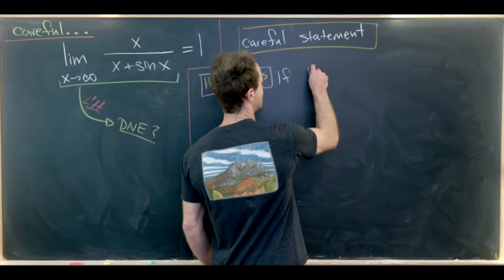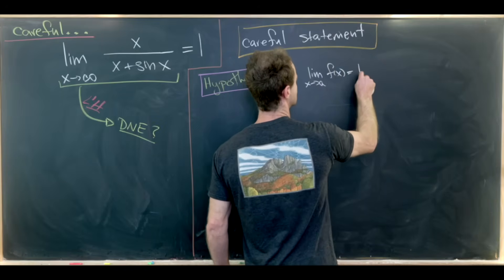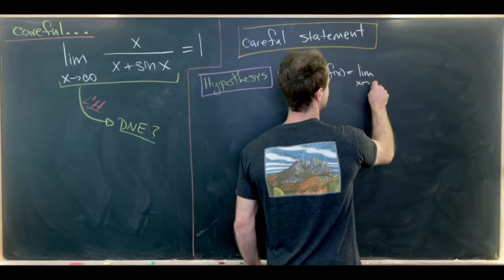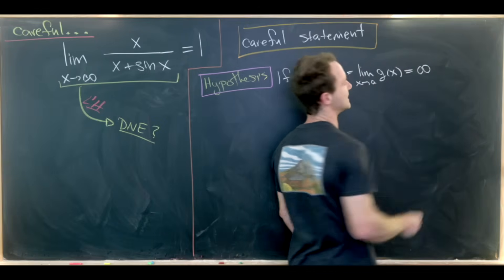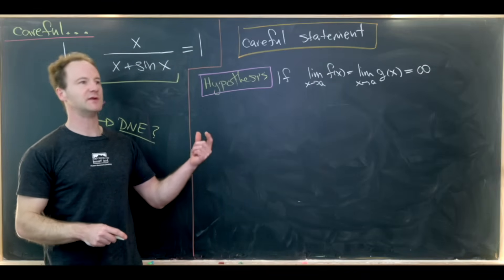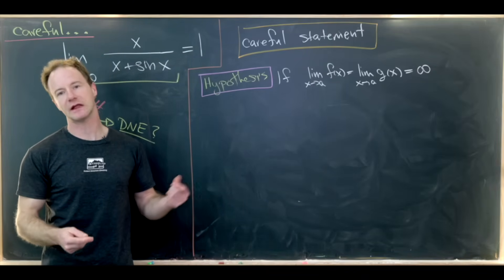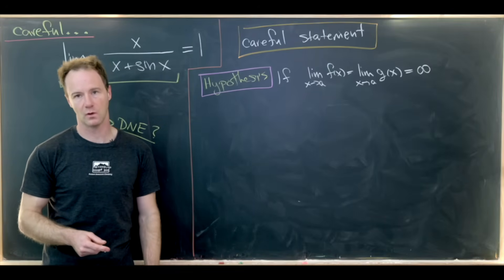If the limit as x goes to a of f of x is equal to the limit as x goes to a of g of x, which is equal to infinity, so this is one special case of L'Hopital's rule. Of course one could be infinity and one could be negative infinity, or they could both be zero. But we're just honing in on one here.